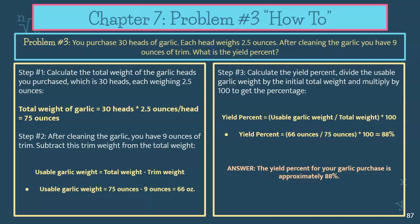Now put that into the formula: 66 ounces of usable edible garlic divided by the APQ of 75 ounces — so 66 divided by 75, times 100 to get your full percent — and you get 88%. The yield percent for your garlic purchase is approximately 88%. Reference the formula triangle, read the steps, and ask your teacher for clarification if you need it.